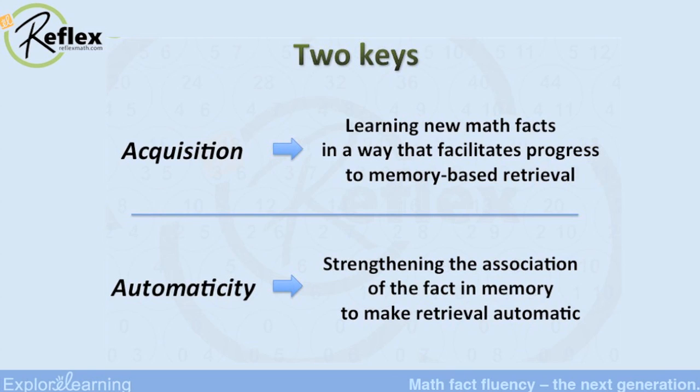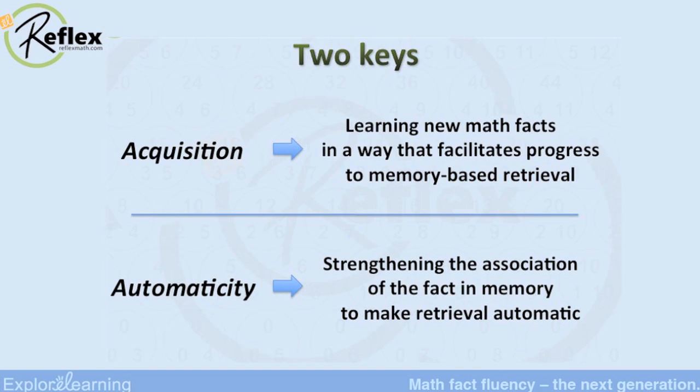Acquisition means learning the new facts in a way that will eventually facilitate retrieval from long-term memory. That's your goal there. I'm going to break this down — we'll give an overview and then go into each step. And then in terms of automaticity, once the child is retrieving the fact from memory, we've got to get it to that level of automaticity. I think sometimes this is the part where we give up. We have to make sure that those times get down into that sub-second area, because that's where you're getting the robust, accurate performance that's sustained over time.